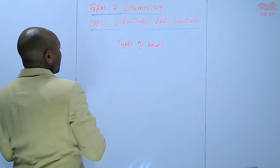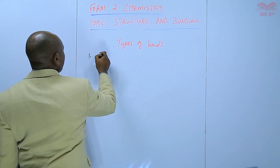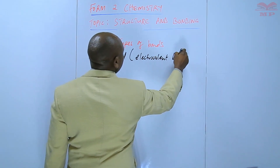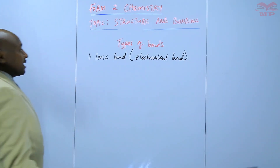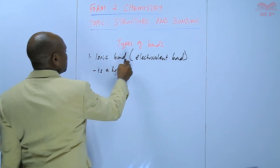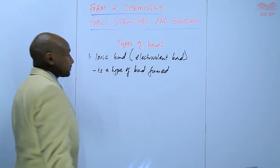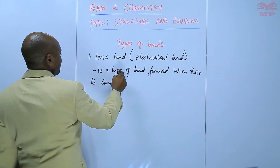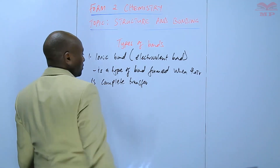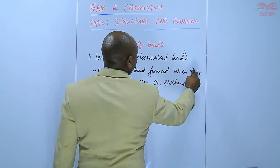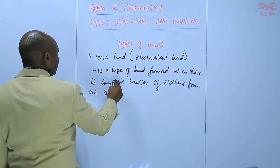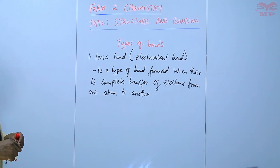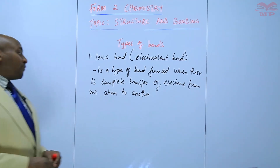The types of bonds — basically there are three types of bonds. First, we have ionic bond, also known as electrovalent bond. This is a type of bond formed when there is a complete transfer of electrons from one atom to another. The key thing is the transfer of electrons from one atom to another.